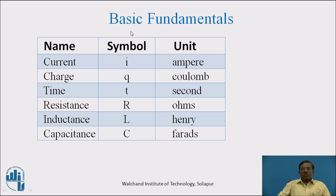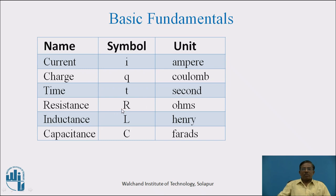Let us start with basic fundamentals and definitions. These are the symbols and their units required to form a differential equation of a given electrical circuit. Current is denoted by I, measured in Ampere. Charge is denoted by Q, measured in Coulomb. Time is denoted by T, measured in Second. Resistance is denoted by capital R, measured in Ohms. Inductance is denoted by capital L, measured in Henry. Capacitance is denoted by capital C, measured in Farads.